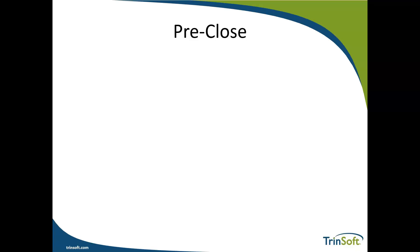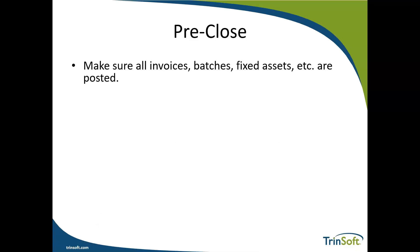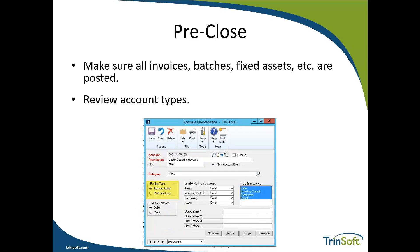Before the actual closing steps, there are a few pre-close steps we encourage our clients to perform. First, make sure that all of your invoices, batches, adjustments, etc. related to the year end you're closing are entered and posted. Next, we encourage you to perform a quick review of your account type setup for balance sheet and profit and loss accounts to ensure they're set up appropriately. Just run a quick Smart List, review your account numbers and account types, to ensure you don't have any balance sheet accounts flagged as profit or loss — which might net to retained earnings — or profit and loss accounts flagged as balance sheet that end up with a balance forward at year end.